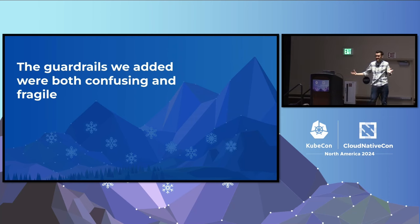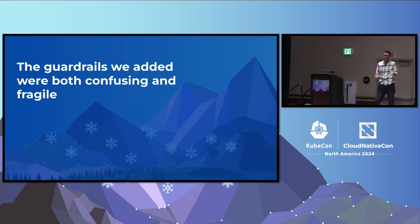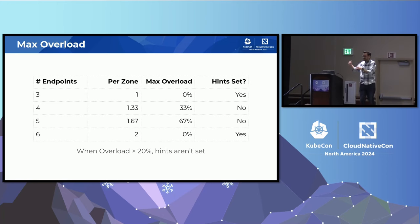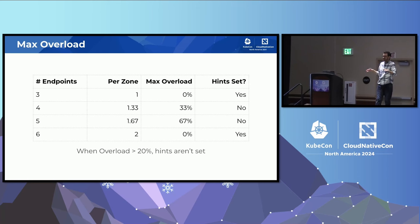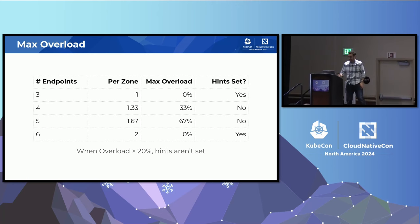If you had experience with topology-aware hints, you may have gotten confounded when it didn't work the way you thought. The guardrails we added were both confusing and fragile. One of the most confounding things was the max overload threshold. When you have a small number of endpoints with an uneven number, we'd bail out all the time — we'd say 'you have four endpoints, we can't distribute those evenly.' So imagine transitioning between three ready endpoints and four: with three, everything goes to the same zone. You go to four — spraying everywhere. Go to five — spraying everywhere. Go to six — same zone again. Very confusing.